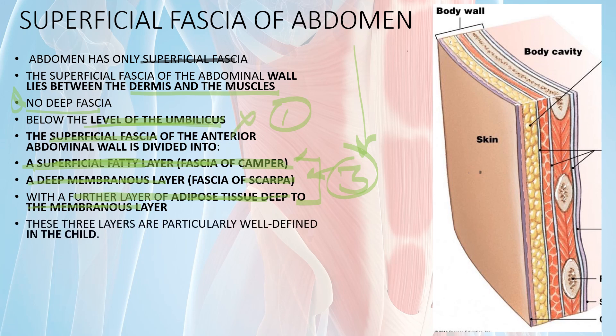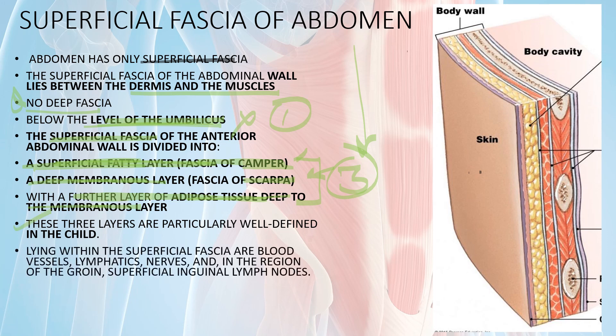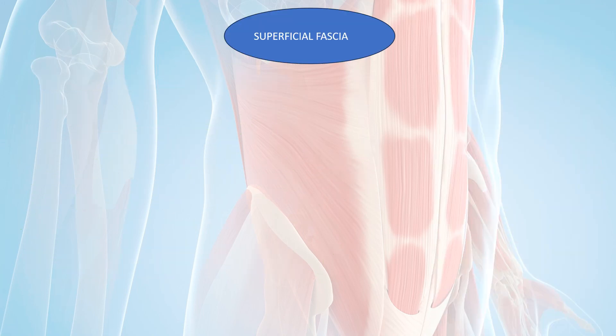In children these three layers are well developed, but in adults they are not well developed. These layers are the area for passage of blood vessels, lymphatics, and nerves, and superficial lymph nodes are present in this area.